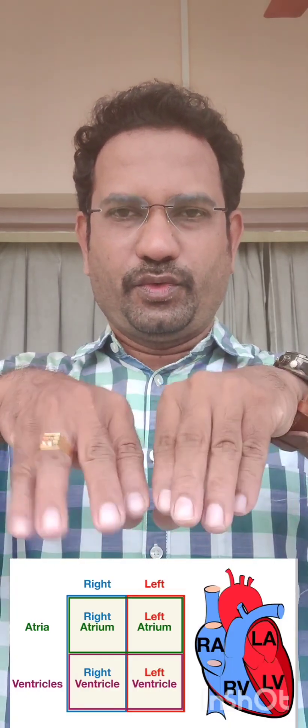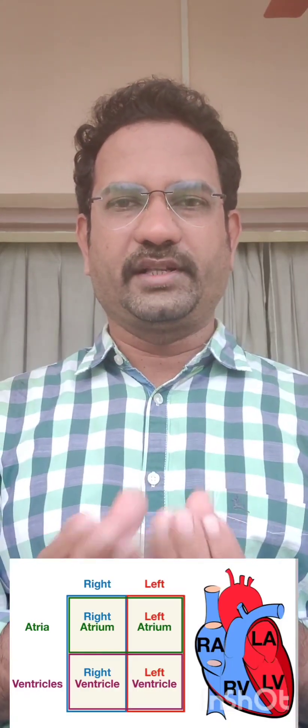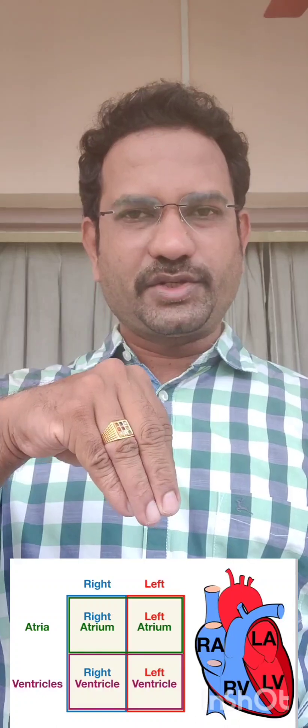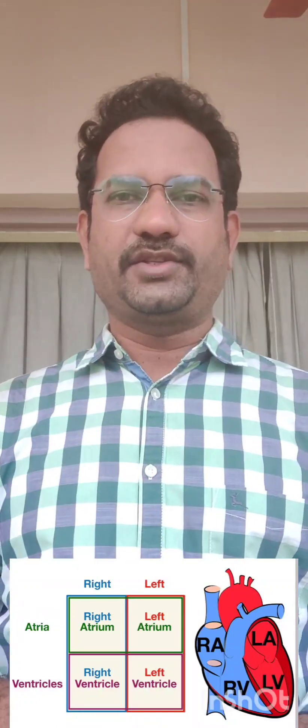Now heart contains four chambers: two atria and two ventricles. Contraction is known as systole, and relaxation is known as diastole.